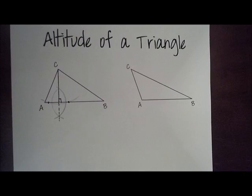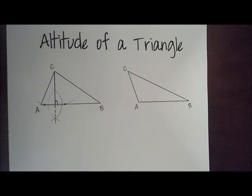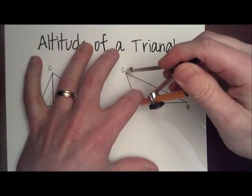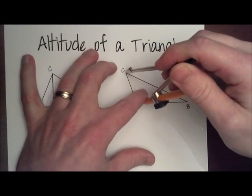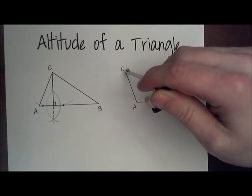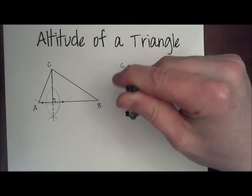Okay, now if we have an obtuse triangle, and we want to do the same thing, I'm going to take my compass, and I need to draw an arc that cuts through AB twice. Now remember, AB is really kind of a line, so what I'm going to do is extend it.